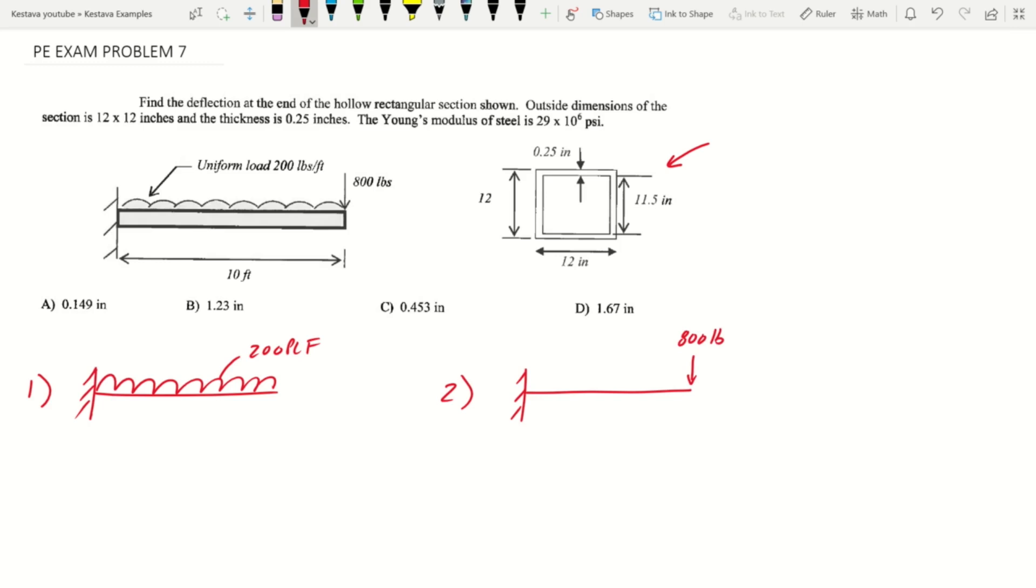The reason we do this is because we have shear moment deflection equations in our steel manual that cover both these two scenarios. We will find them separately, find deflections for both scenarios, and then we'll just add those deflections together to get your sum of total deflection of the member.